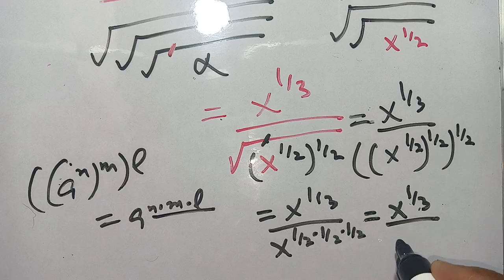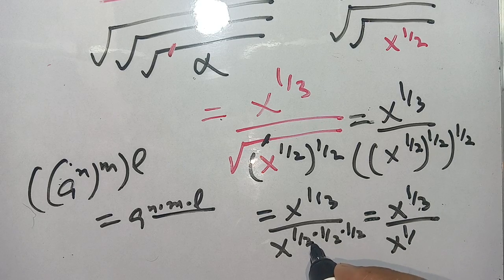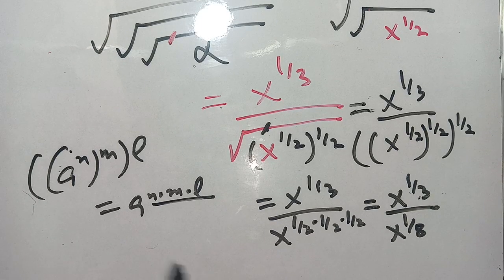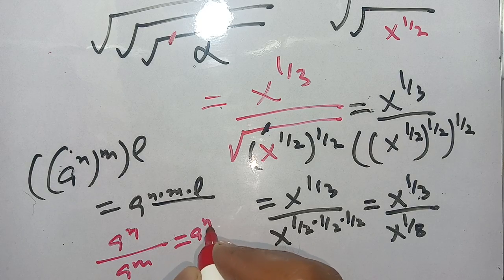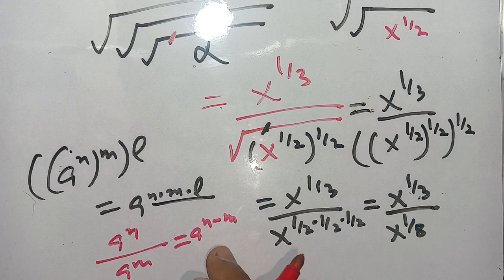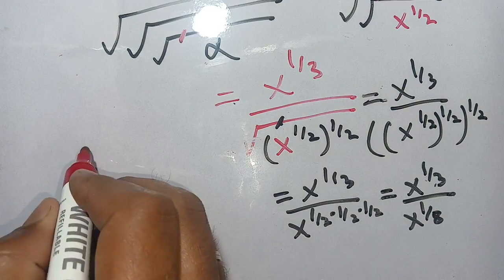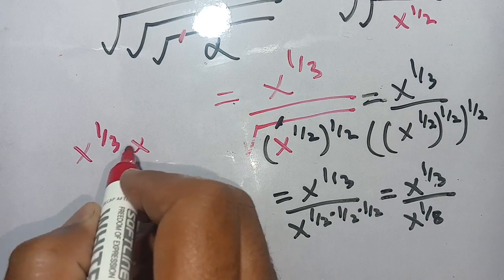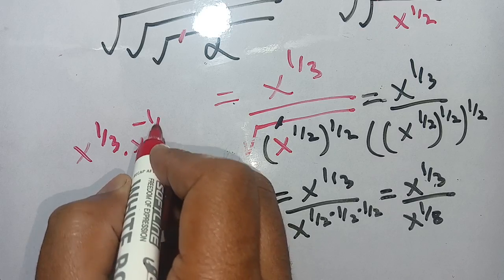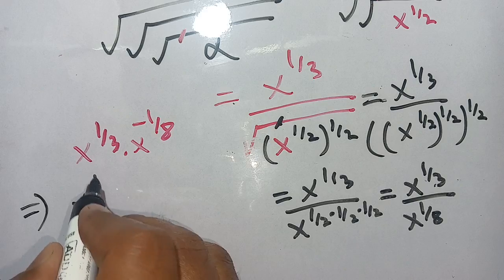This simplifies to x power 1 divided by 3 divided by x power 1 divided by 8, since 2 times 2 is 4, and 4 times 2 is 8. Using the identity a^n divided by a^m equals a^(n−m), we apply this and write x power 1 divided by 3 times x power minus 1 divided by 8.